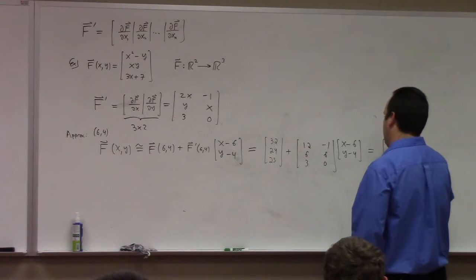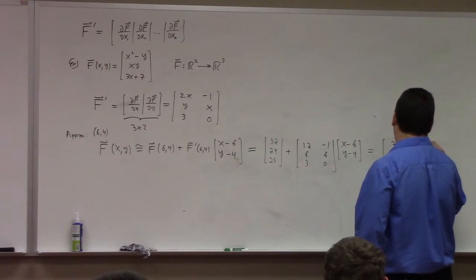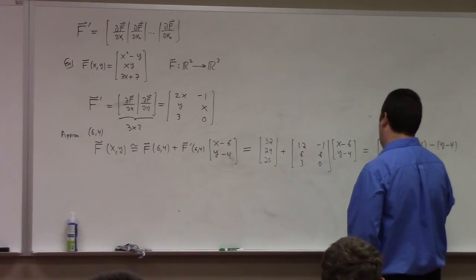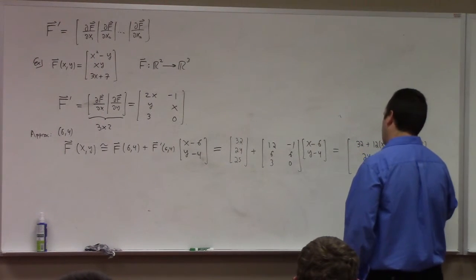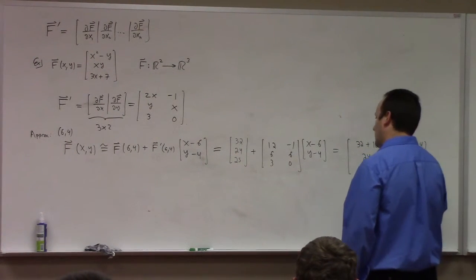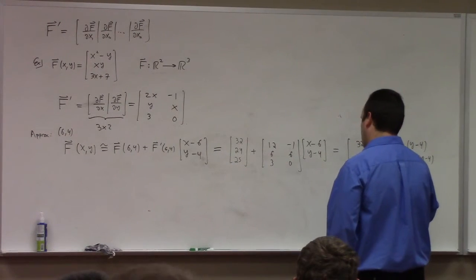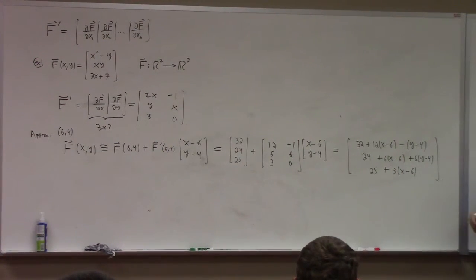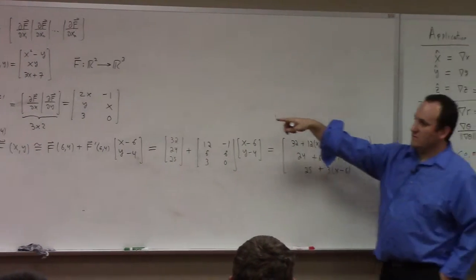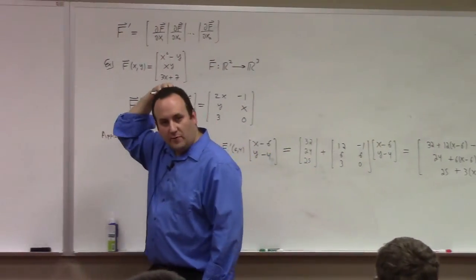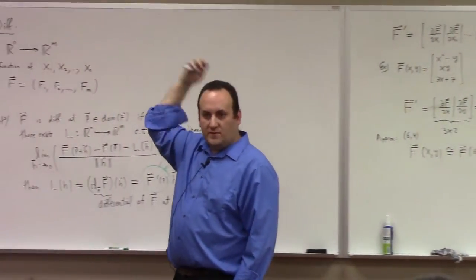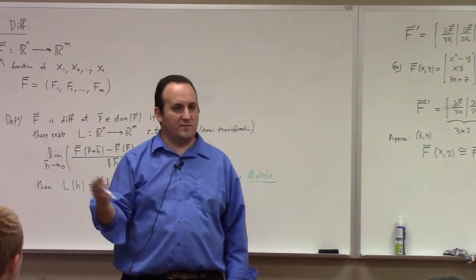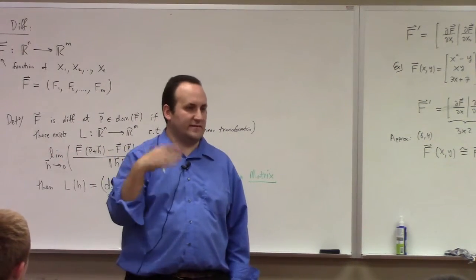And so there you have it. 32 plus 12 times x minus 6, minus y minus 4, parentheses. 24 plus 6 times x minus 6, plus 6 times y minus 4, parentheses. And 25 plus 3 times x minus 6. This is the best linear approximation to this nonlinear function up here at that 0.64. So you just calculate this matrix of derivatives, plug in the number, it gives you the best linearization to functions from whatever space to whatever space you want, and that's how you do it.